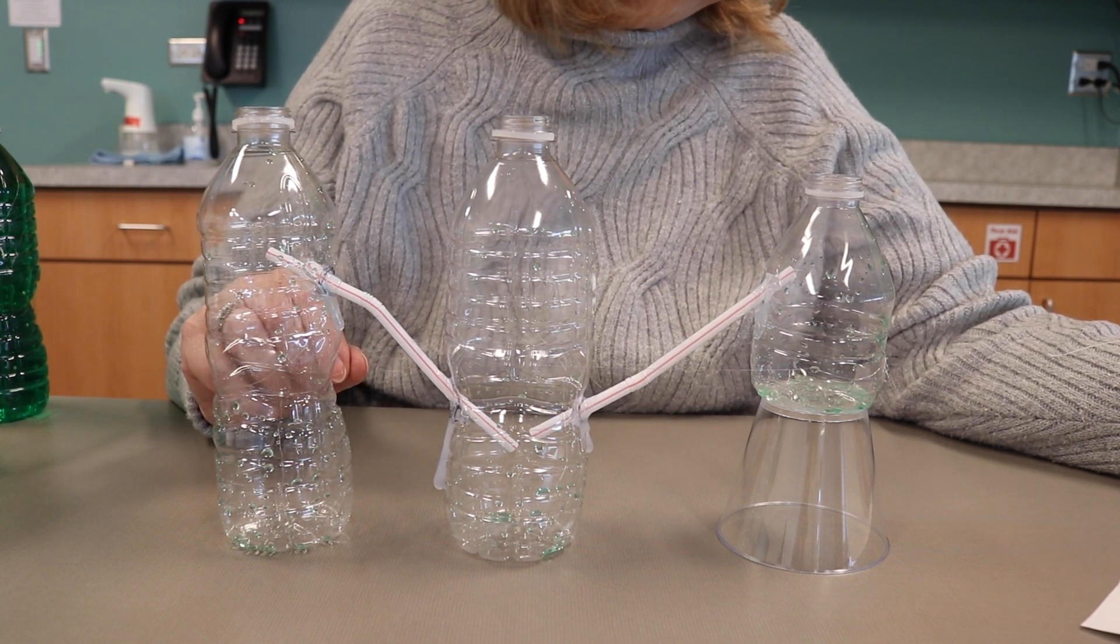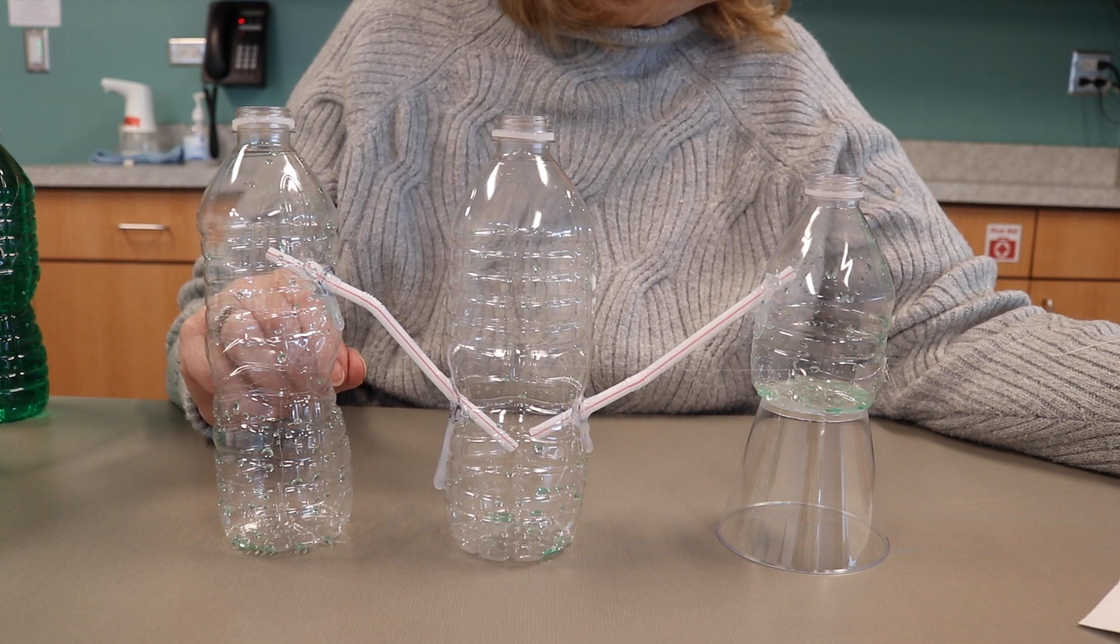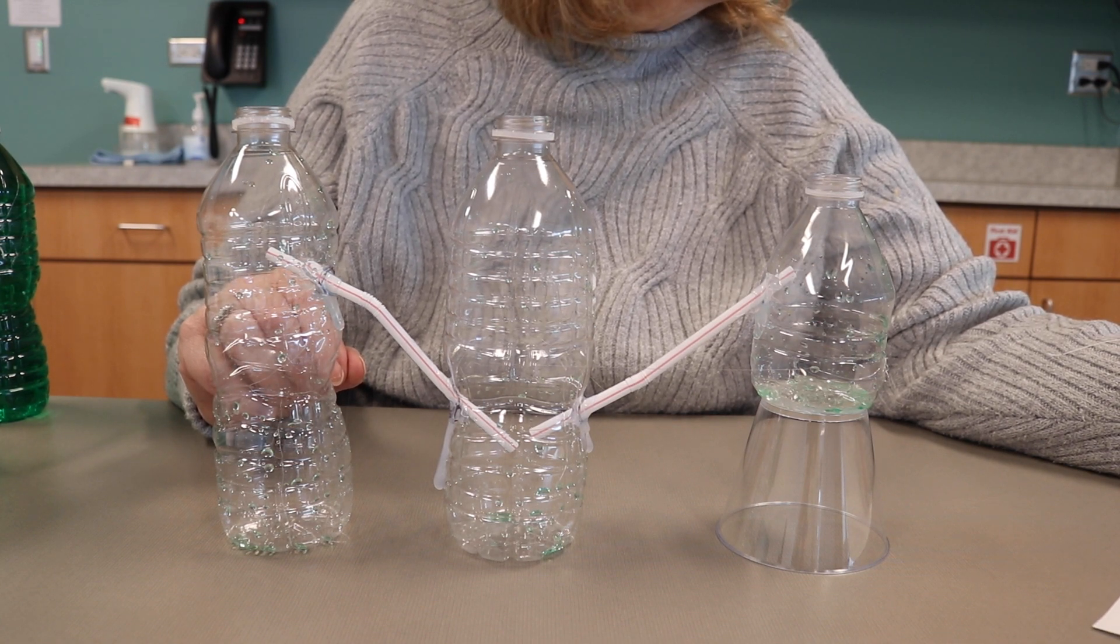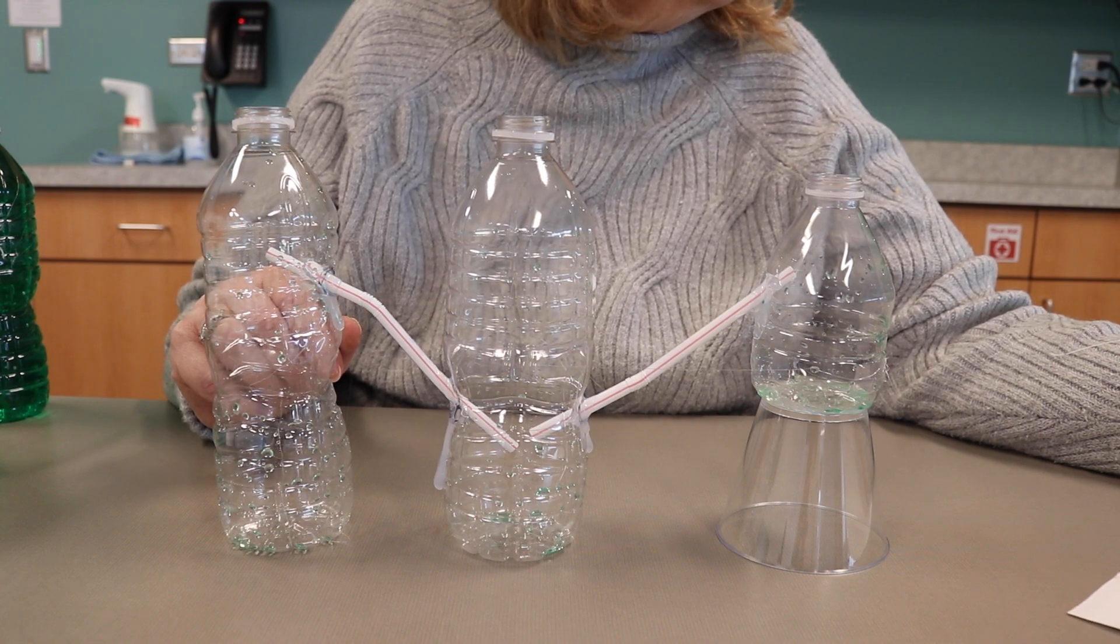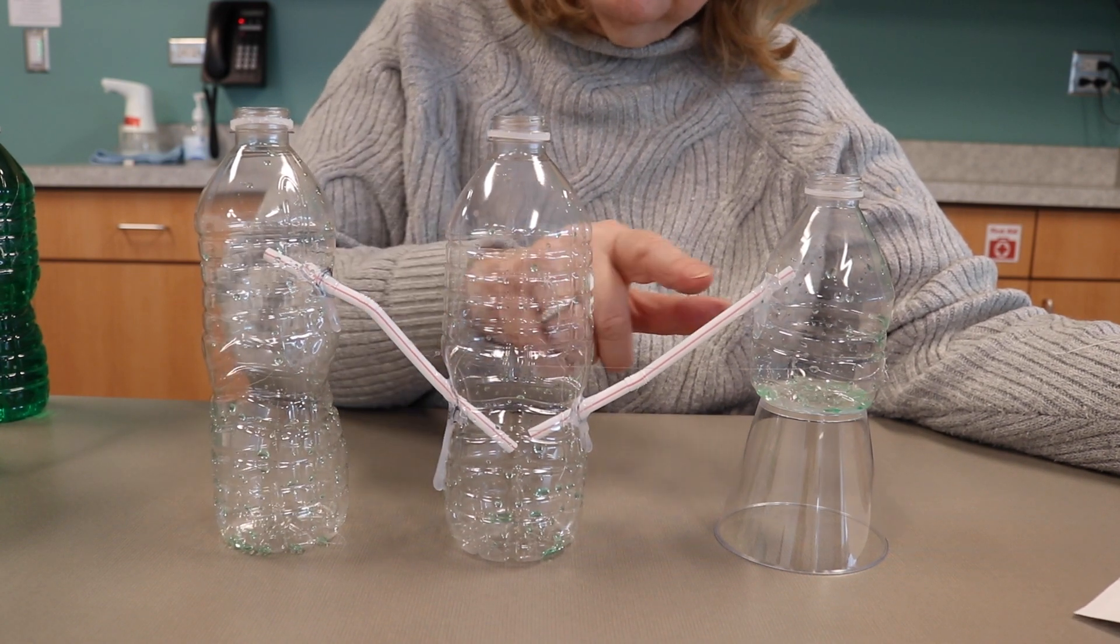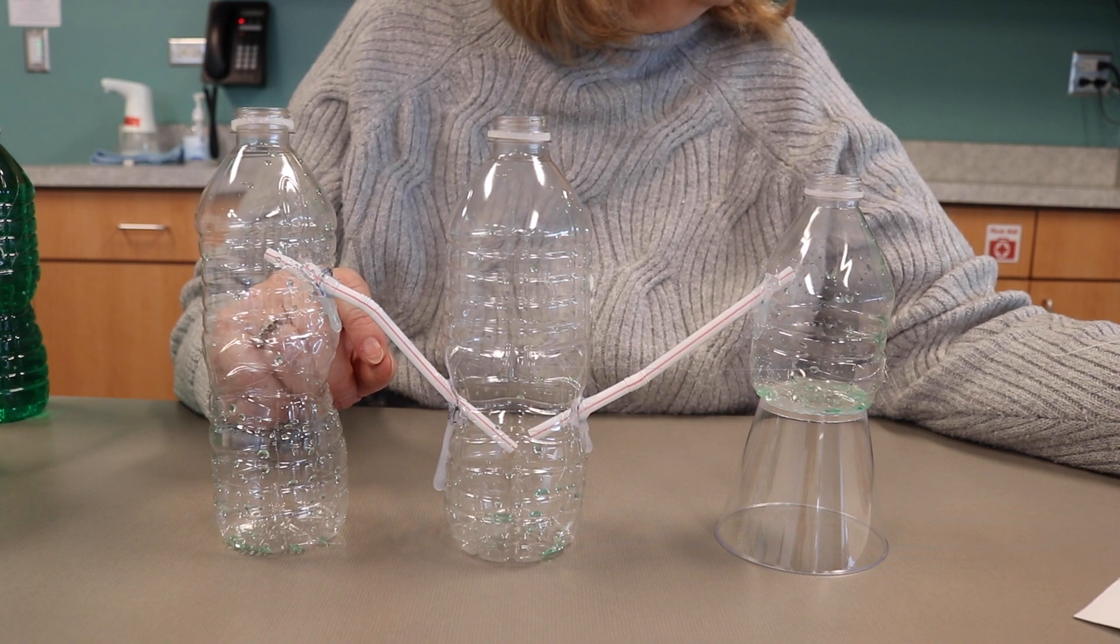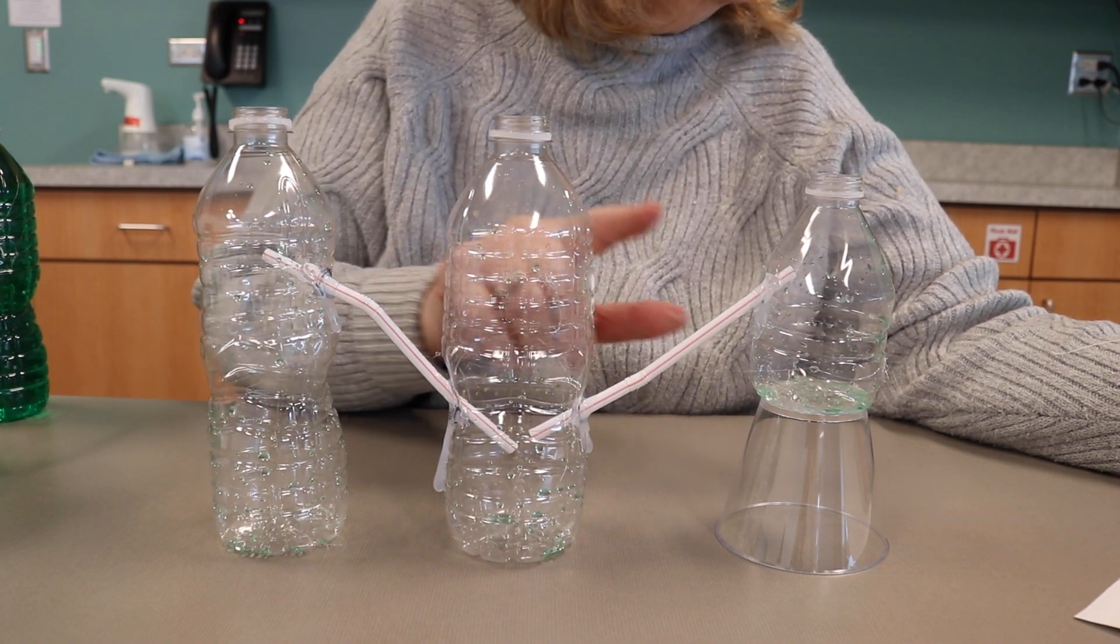Siphons can look very different from each other and they each do special things with water. So what is a siphon? Well, it's a tube, and the straw is the tube in this, and it moves water from one container to another.